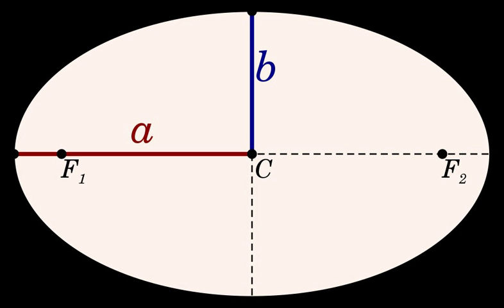The semi-minor axis of an ellipse or hyperbola is a line segment that is at right angles with the semi-major axis and has one end at the center of the conic section. For the special case of a circle, the lengths of the semi-axes are both equal to the radius of the circle.